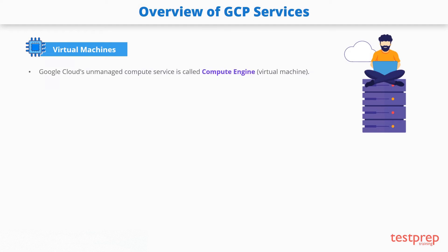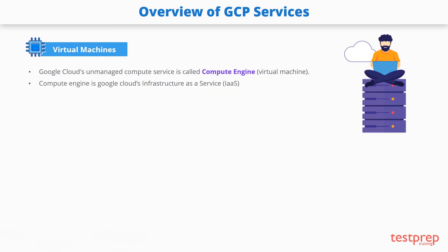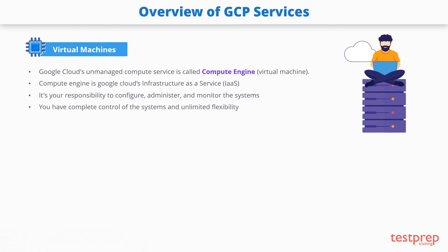Google Cloud's unmanaged compute service, or virtual machine offering, is called Compute Engine. You can think of Compute Engine as an infrastructure as a service by Google Cloud. The system provides a robust computing infrastructure, but you must choose and configure the platform components you want to use. With Compute Engine, it's your responsibility to configure, administer, and monitor the systems. Google will ensure that resources are available and reliable, but it's up to you to provision and manage them.